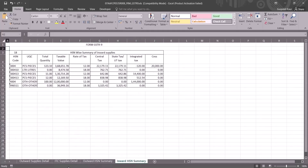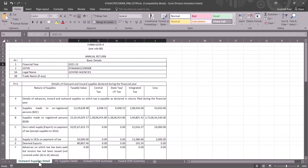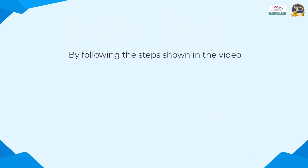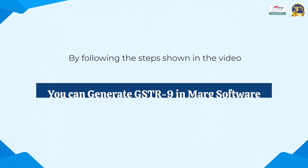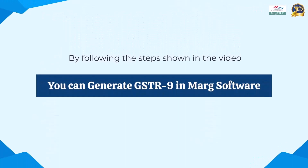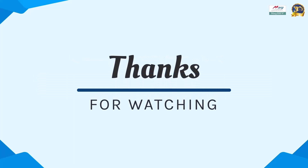Here the outward supplies detail, ITC supplies detail, outward HSN summary, and inward HSN summary will be shown to you, and here you can check whether your data is properly showing or not. So friends, by following the process shown in the video, you can generate GSTR 9 in Mark software. Thanks for watching.